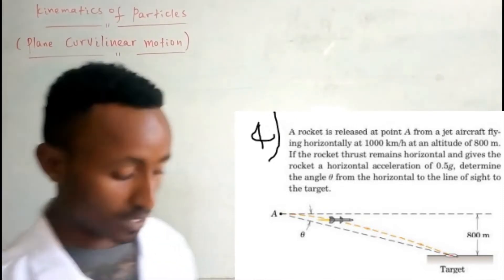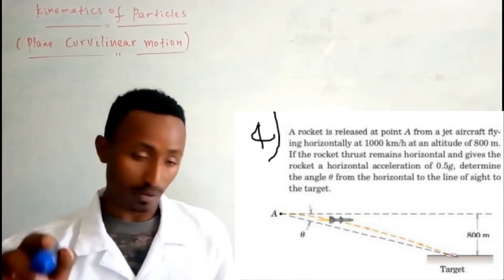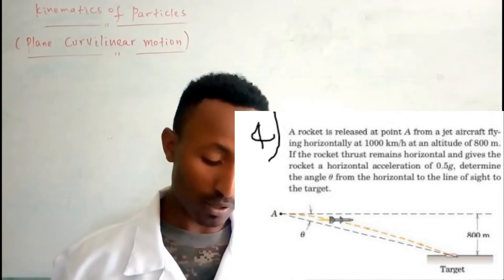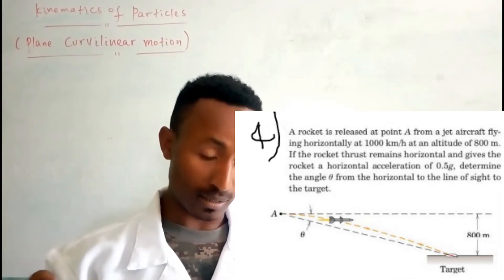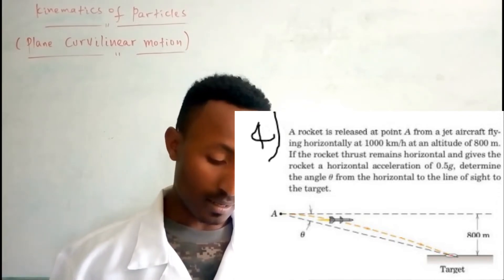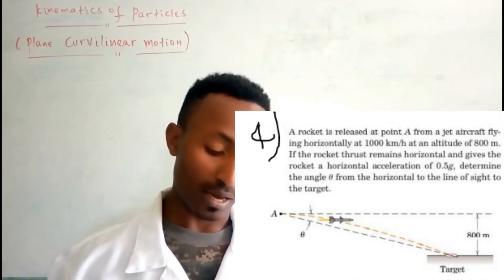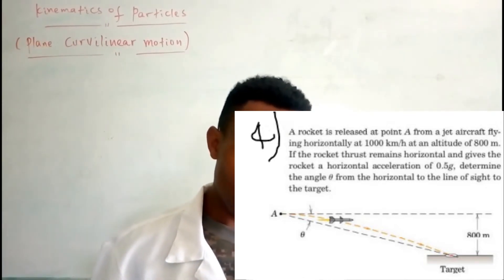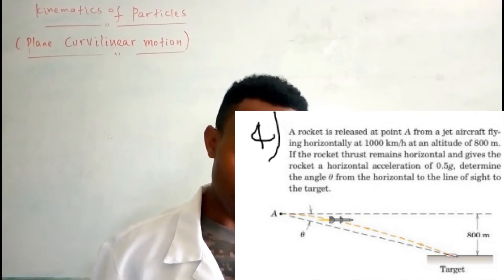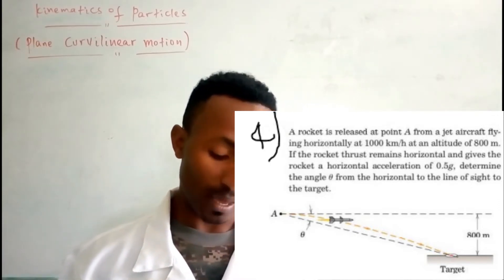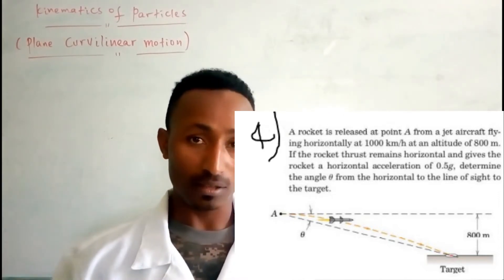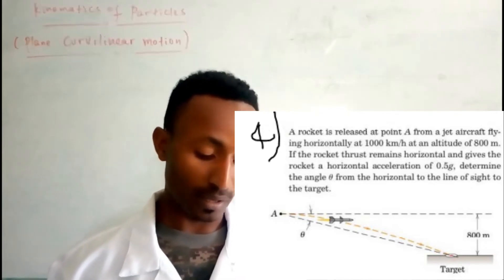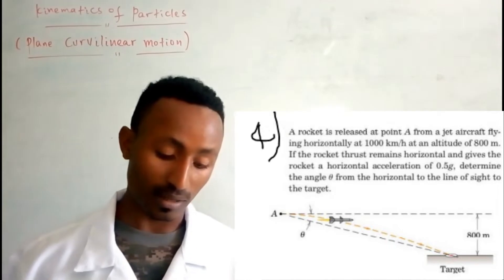The first one is okay. Now we have to do the problem: a rocket is released at point A, releasing the vehicle from a jet aircraft — a jet aircraft — flying horizontally at 1000 km per hour at an altitude of 800 meters.